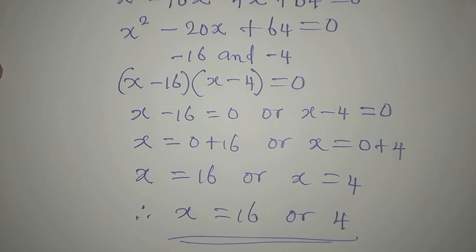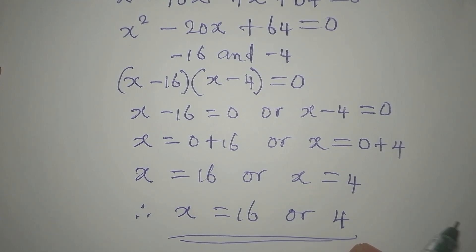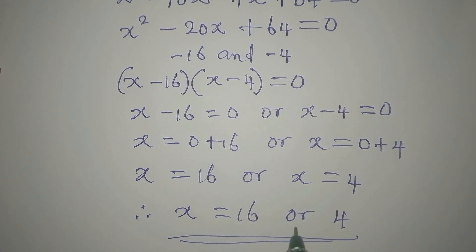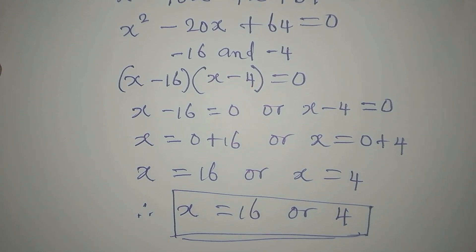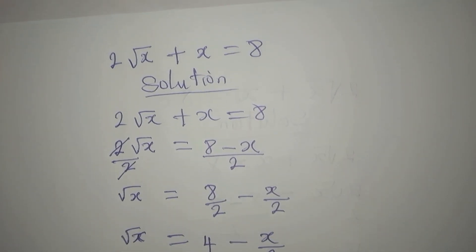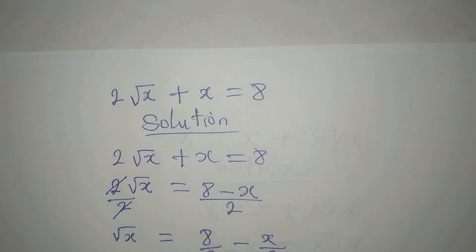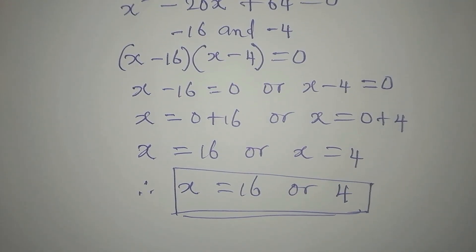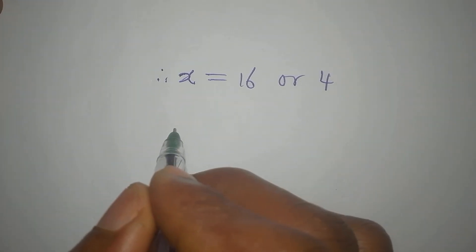This looks like the solution, but we must verify. Since the original equation was not a quadratic — it contained a square root — we should only expect one valid solution. We need to check which value actually satisfies the original equation 2√x + x = 8.